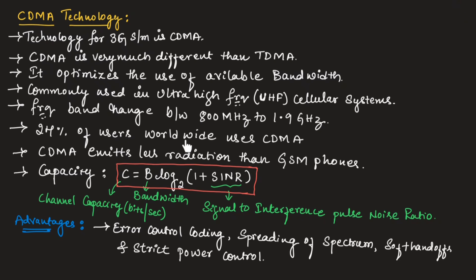24% of users worldwide use CDMA, which is very less compared to GSM technology. Most of the users worldwide use GSM technology; 24% of the users will use CDMA technology. CDMA technology emits less radiation when it is compared with GSM phones.